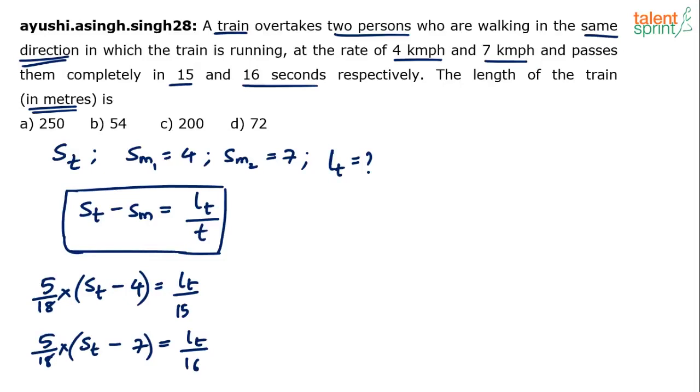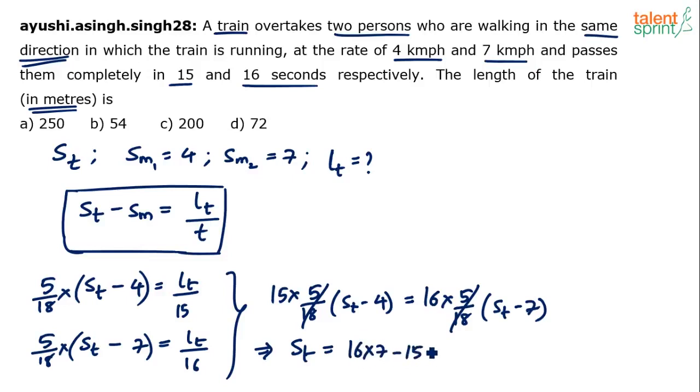So find out St first. From these two equations it is better you evaluate St first and then put that back in one of the equations to get Lt. So I can say 15 times 5 by 18 into St minus 4 equals 16 times 5 by 18 into St minus 7. So 5 by 18 gets cancelled on both the sides.